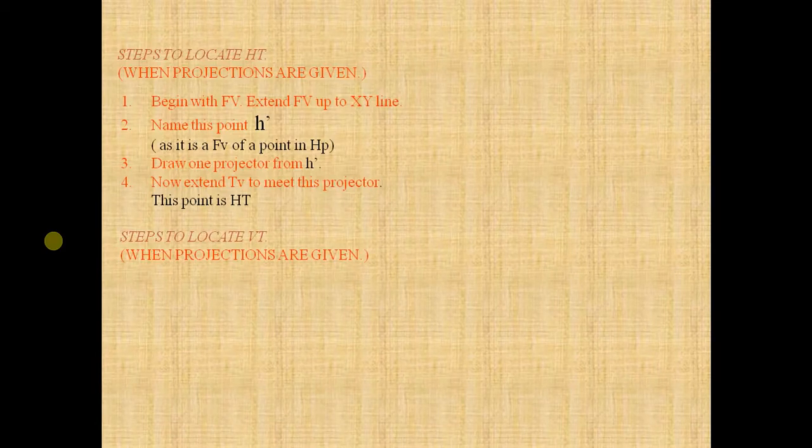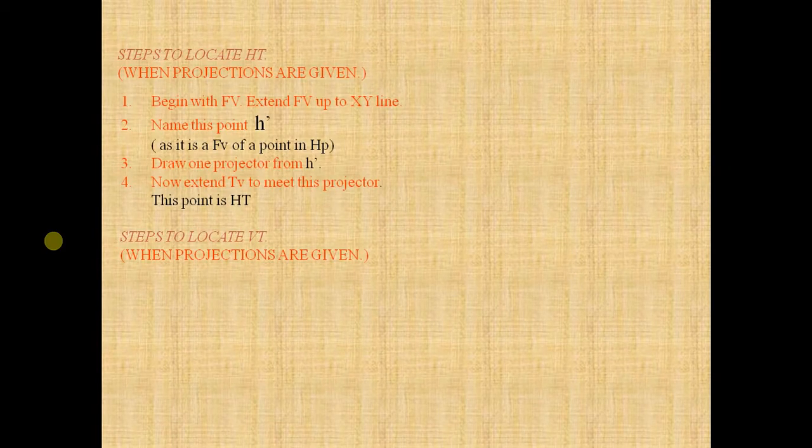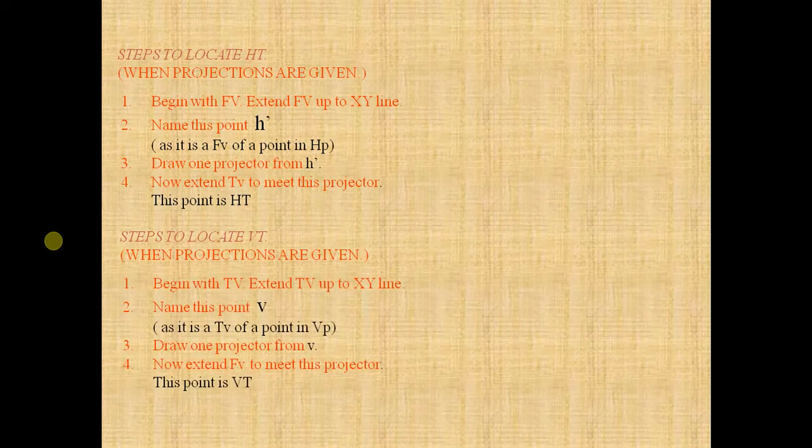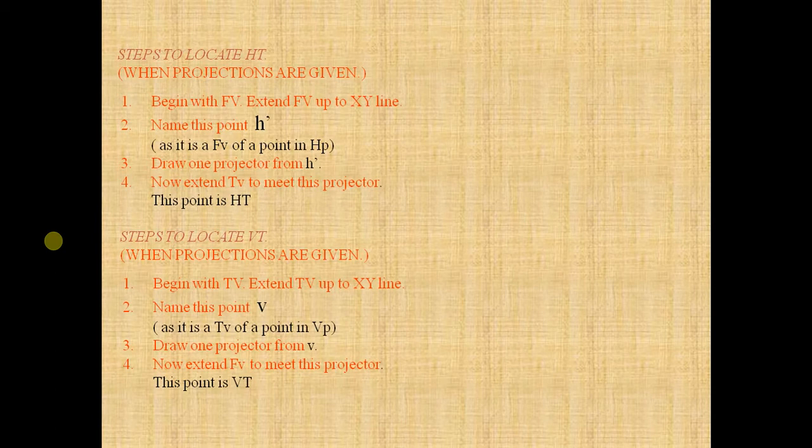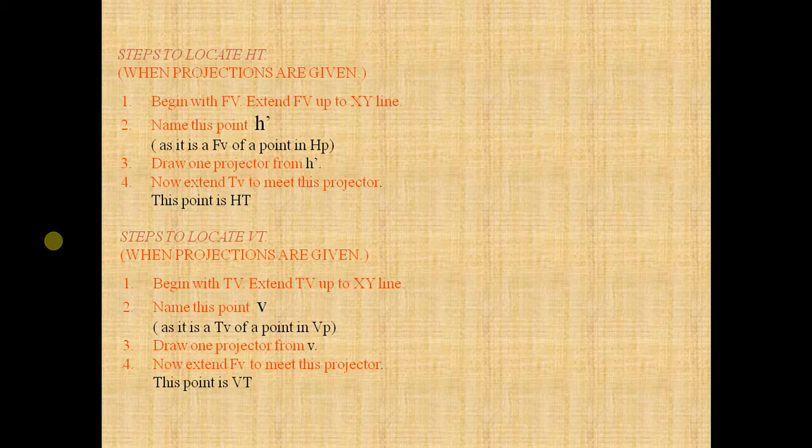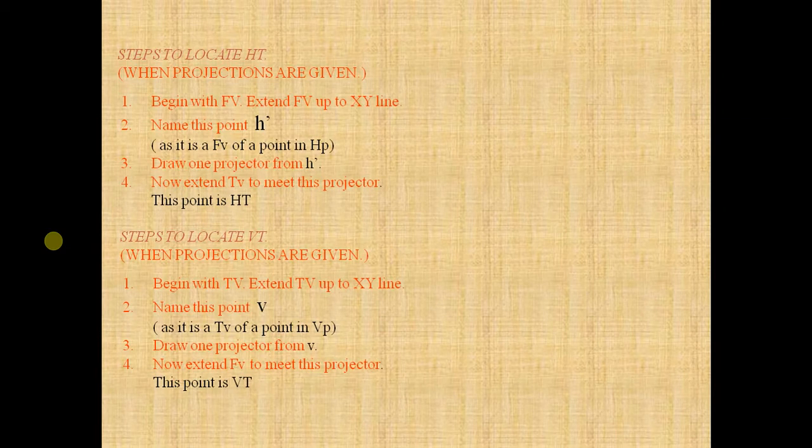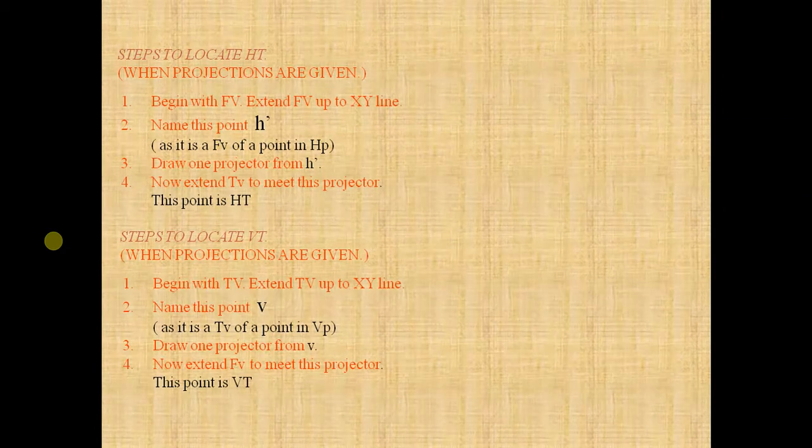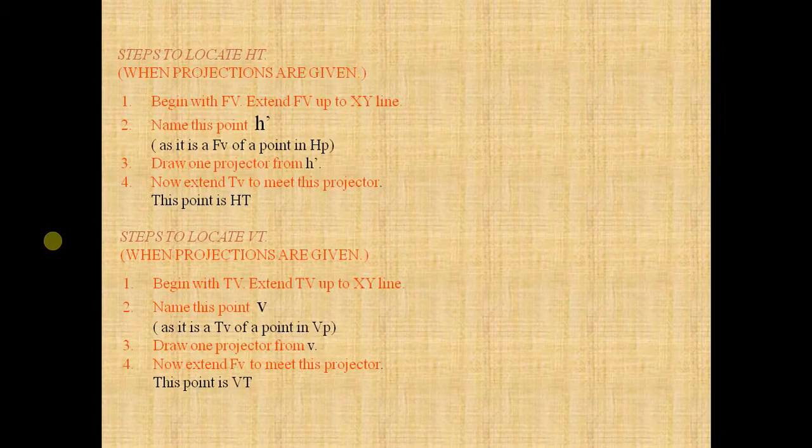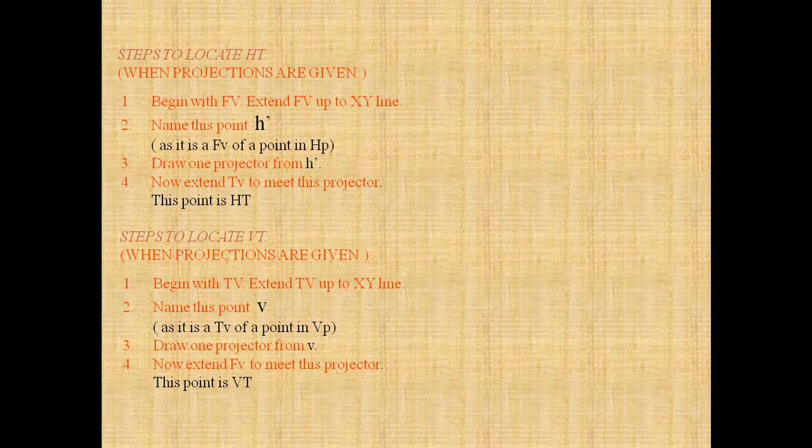And here are the points to locate vertical trace when projections are given. Here begin with the TV means top view, extend top view up to X-Y line, name that point as V as it is a TV. It is a top view of point in VP. Draw one projection from V, now extend front view to meet the projector from V. This point is VT. Now let us understand it by using a diagram.